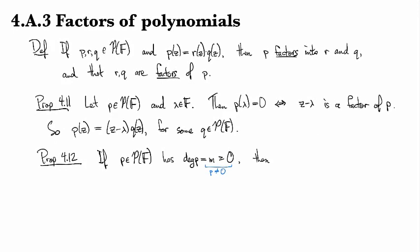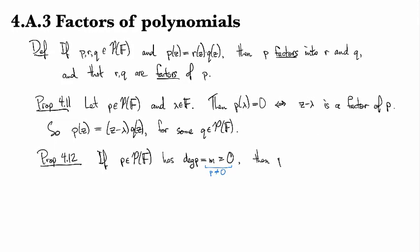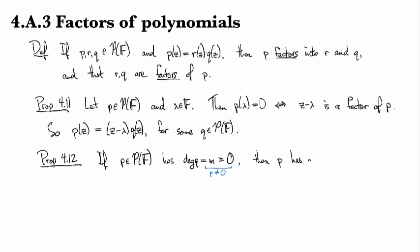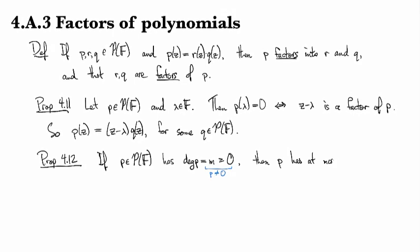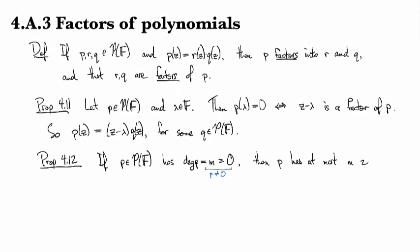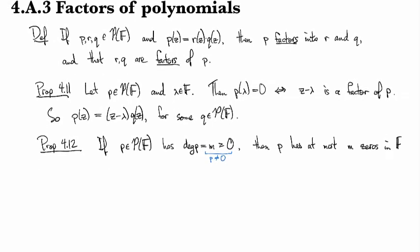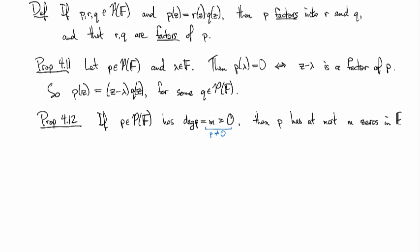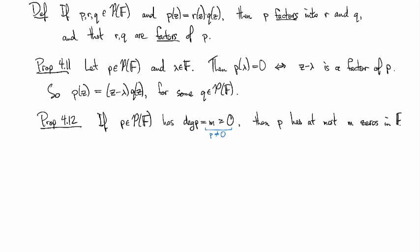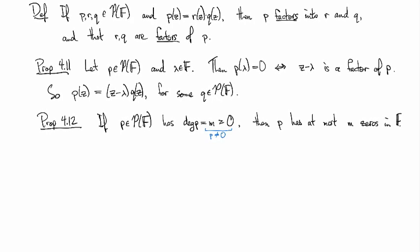For a good weird reason, but nonetheless a weird reason. Then P has at most M zeros in F, and it's an item of interest to know whether or not it has exactly M.